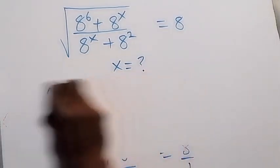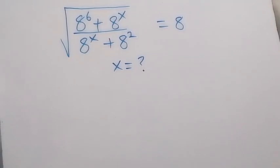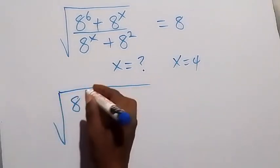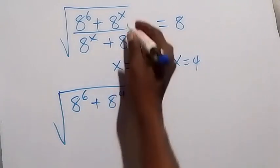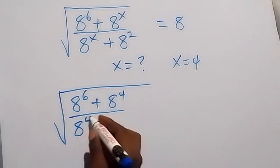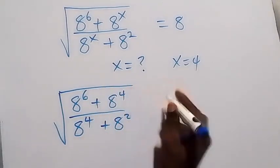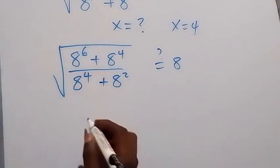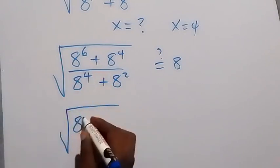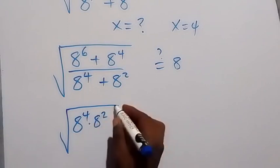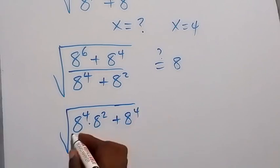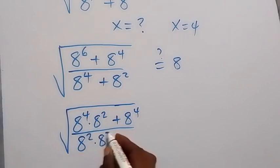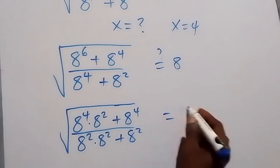This will become: square root of 8 raised to the power 6, for x equals to 4, so we are going to have square root of 8 raised to the power 6 plus 8 raised to the power 4 — that's the value of x we got — divided by 8 raised to the power 4 plus 8 squared. Is this going to give us 8? When we check, we can write 8 raised to the power 6 as square root of 8 raised to the power 4 times 8 raised to the power 2, then plus 8 raised to the power 4, divided by 8 raised to the power 4 times 8 squared, then plus 8 squared. Is this going to give us 8?